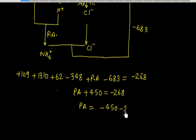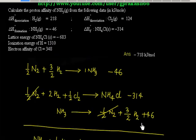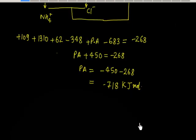Therefore, proton affinity PA equals minus 450 minus 268, which gives minus 718 kJ per mole. All values are in kJ per mole. This is the proton affinity value of NH3 — when NH3 gains a proton, this amount of energy is released. Proton affinity is an exothermic process; the gain or capture of a proton is exothermic.